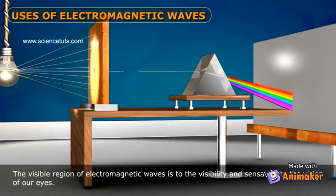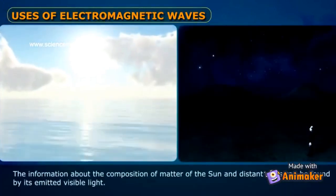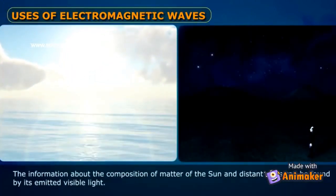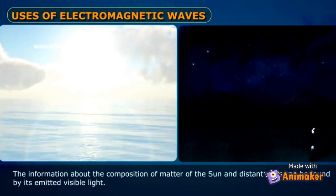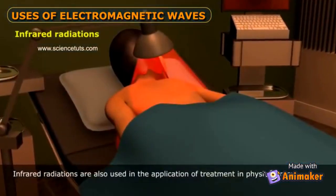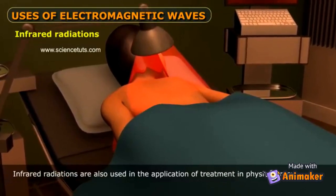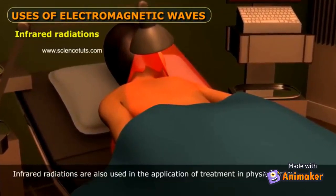The visible region of electromagnetic waves is responsible for visibility and the sensation of vision in our eyes. Information about the composition of matter of the sun and distant stars can be found from their emitted visible light. Infrared radiations are also used in physiotherapy treatments.